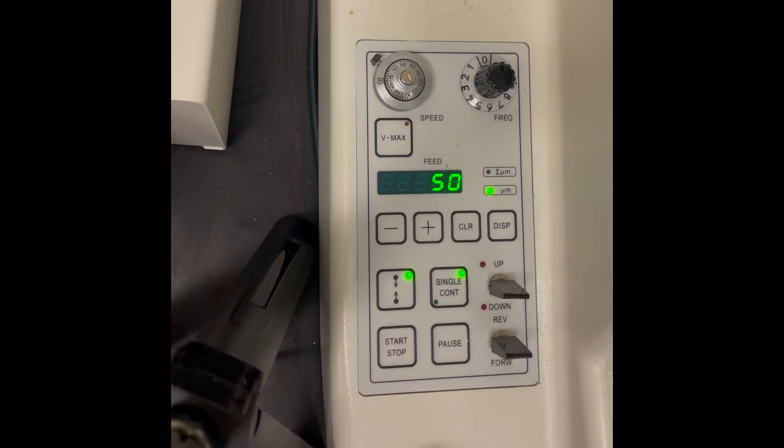Once the cut window is set, we have two options for our sectioning. The first is to use the single cut setting by pressing that button followed by the start button, or we can also use a continuous cut setting, which is shown by pressing that same button again and then the start button.